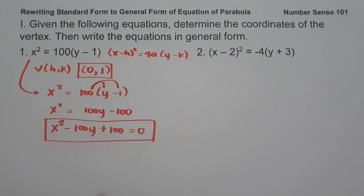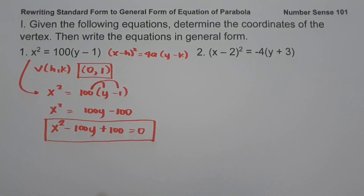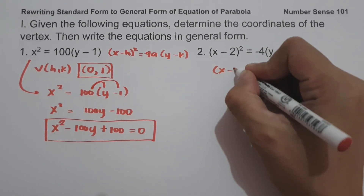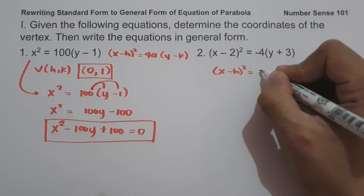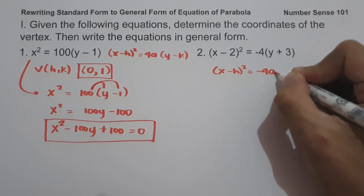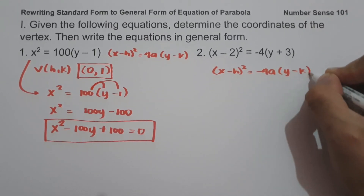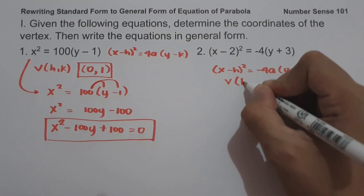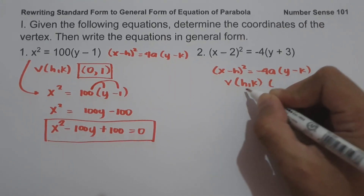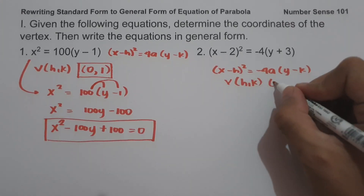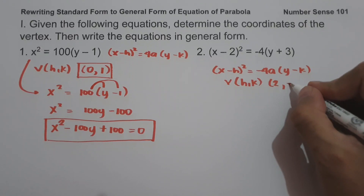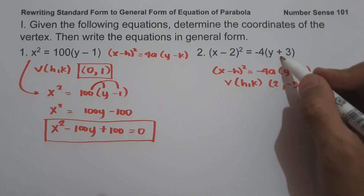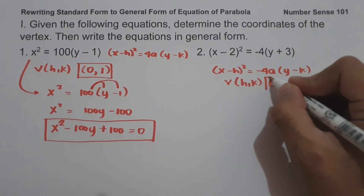On example number 2, we have (x − 2)² = −4(y + 3). The equation is written in the form of (x − h)² = −4a times quantity (y − k). To find the vertex, that is h and k: the value of h is 2, and k is negative 3 — that is the opposite sign of positive 3.